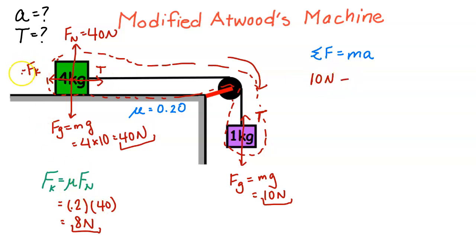So that would be 10 newtons minus, and my Fk here, this Fk is 8 newtons. So 10 minus 8 newtons equals, and here you've got to be real careful, this is your system mass, meaning it's all the mass in your system. I've got 4 kilogram and 1 kilogram, so that's going to be 5 kilograms.